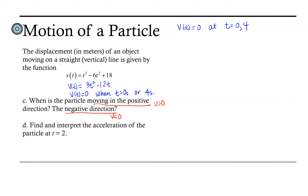Velocity can only change signs around points at which velocity equals 0. Assuming we start at time t equals 0, t equals 0 and t equals 4 are our points of interest. We want to know how velocity is behaving between those two points, because velocity equals 0 at both of them — so the particle is not moving there. Since s and v are continuous functions, velocity will be entirely positive or entirely negative on the whole interval from 0 to 4.